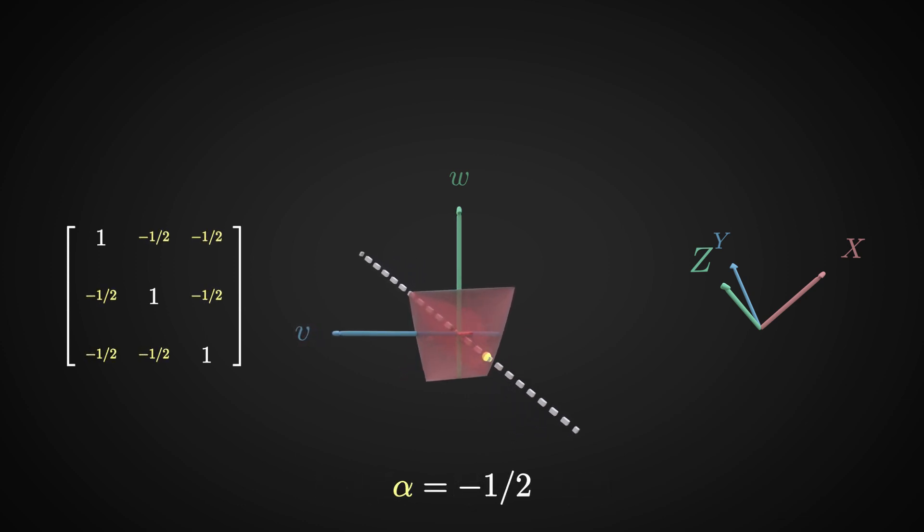And if you want to find the configuration of vectors x, y, z where the inner product between any pair of vectors is equal to minus one-half, you can call the matrix square root function, which leads to the following configuration.